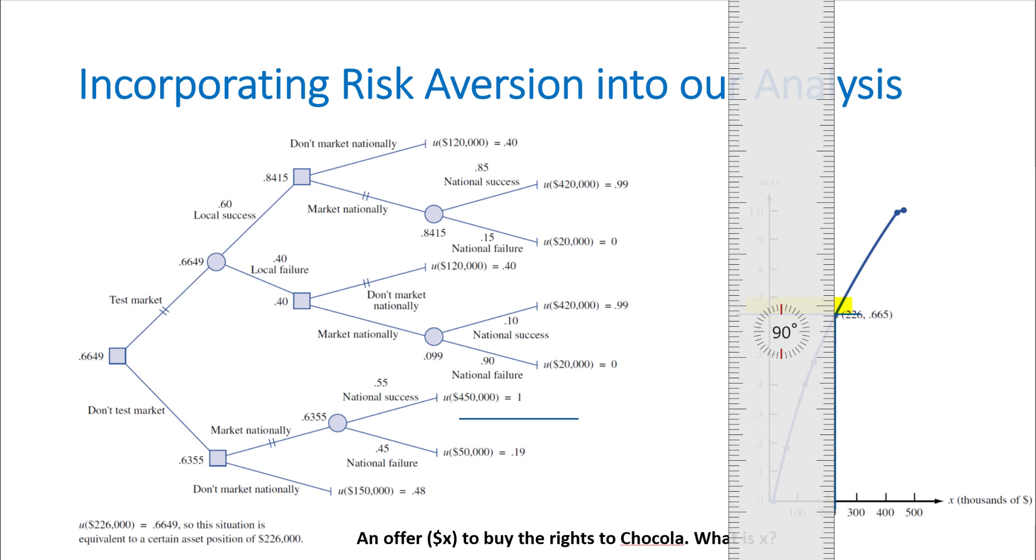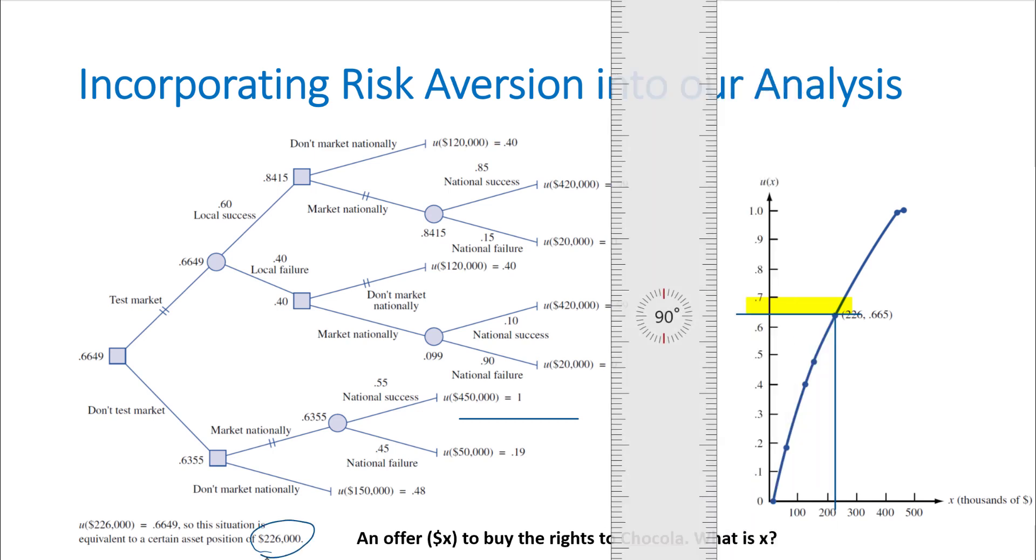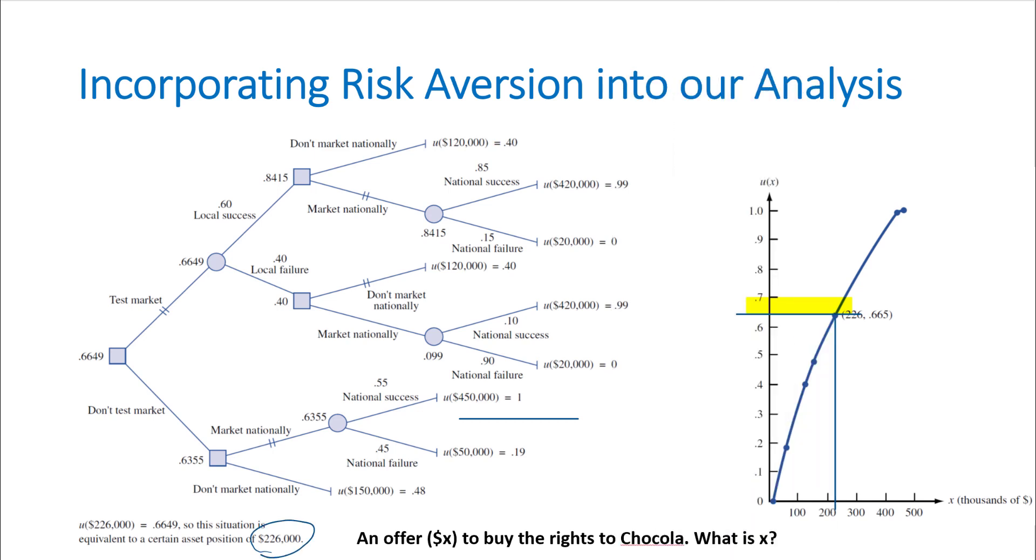That gives me $226,000. What does that mean? It means that the company who has this utility function is indifferent between going through this whole marketing effort and which has some benefits, some potentials.